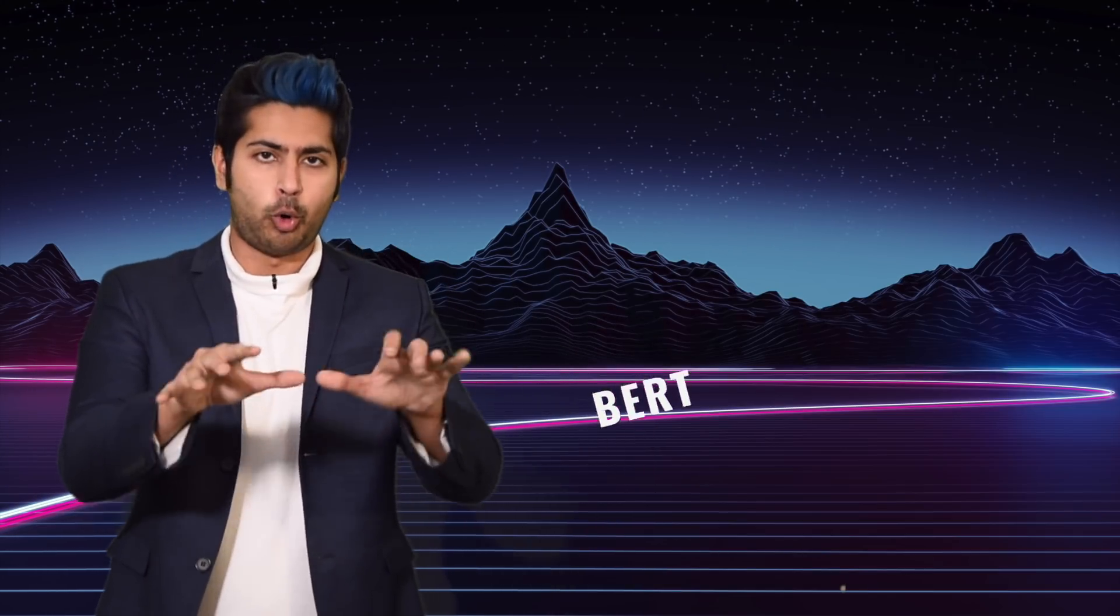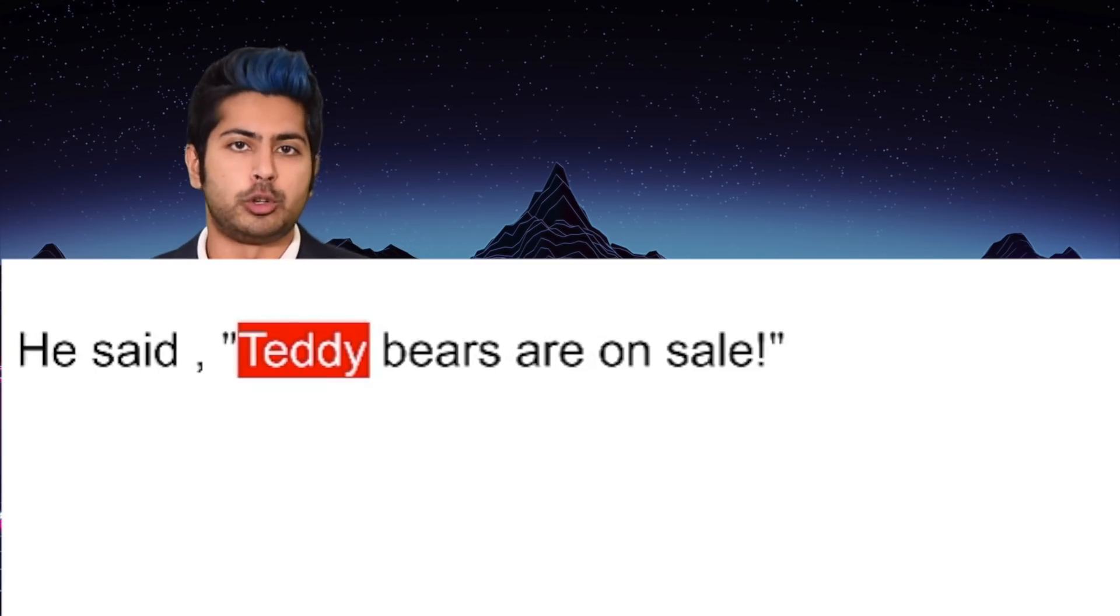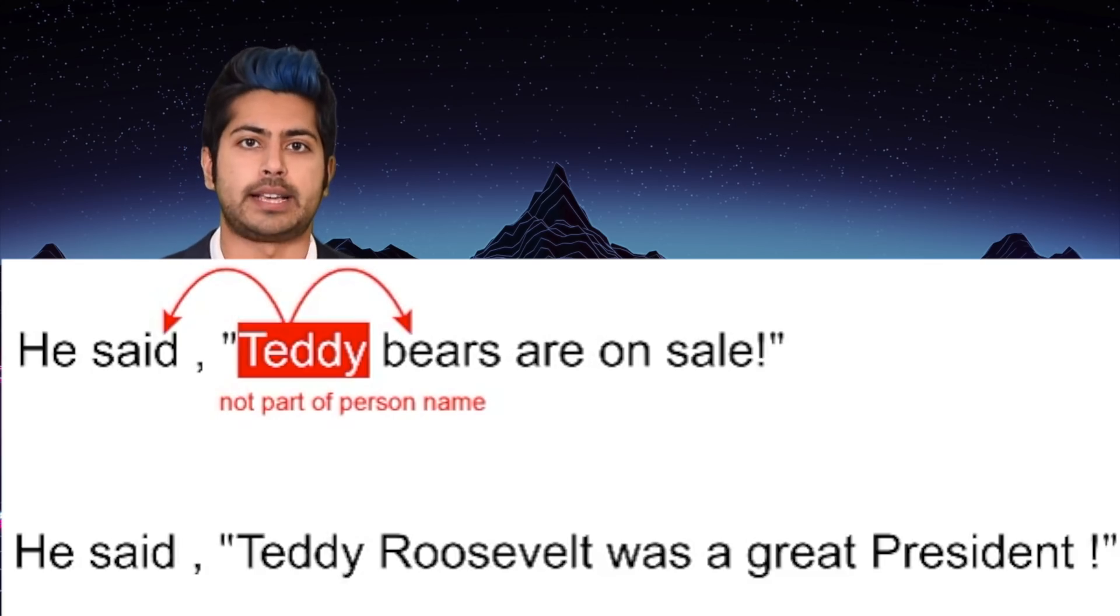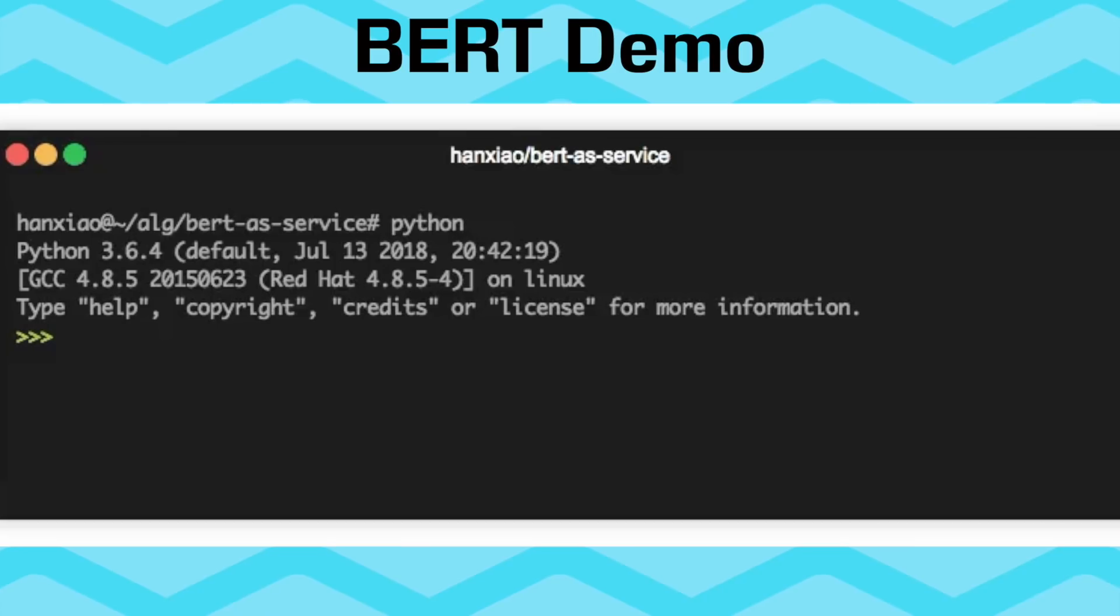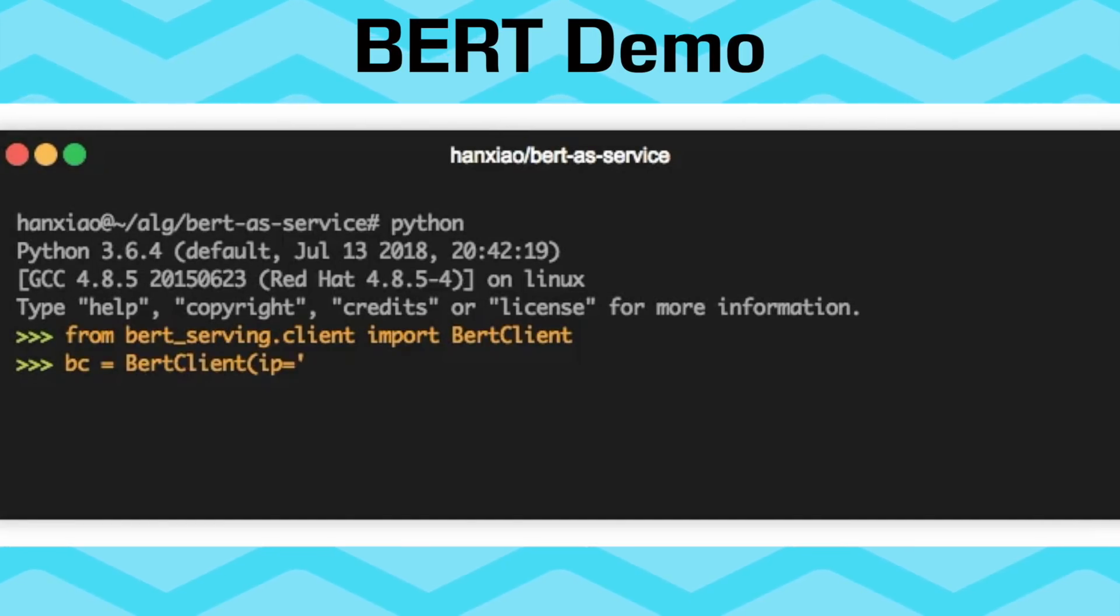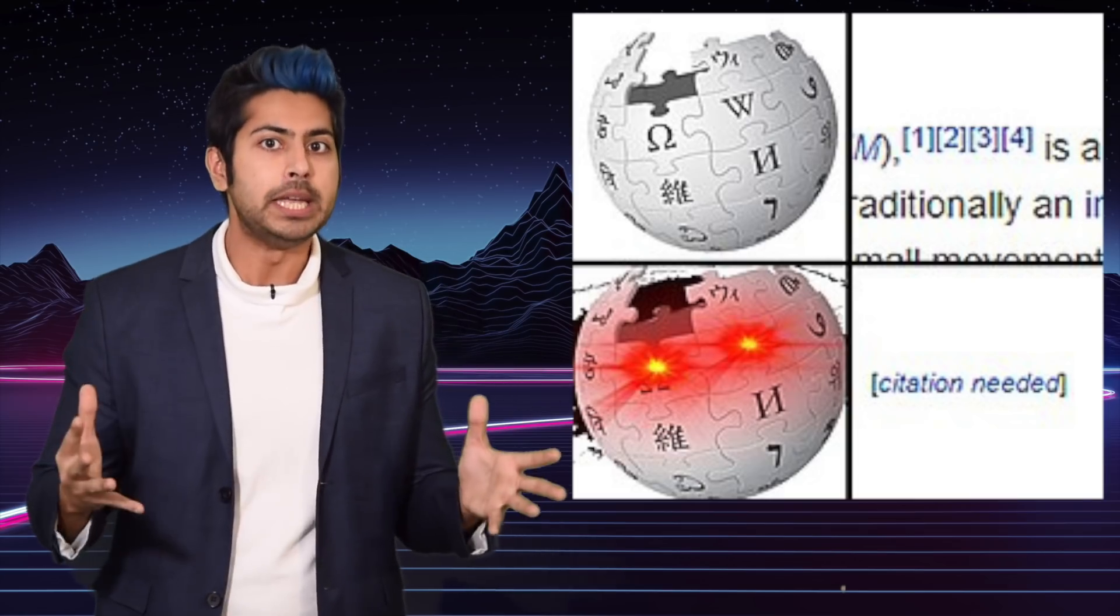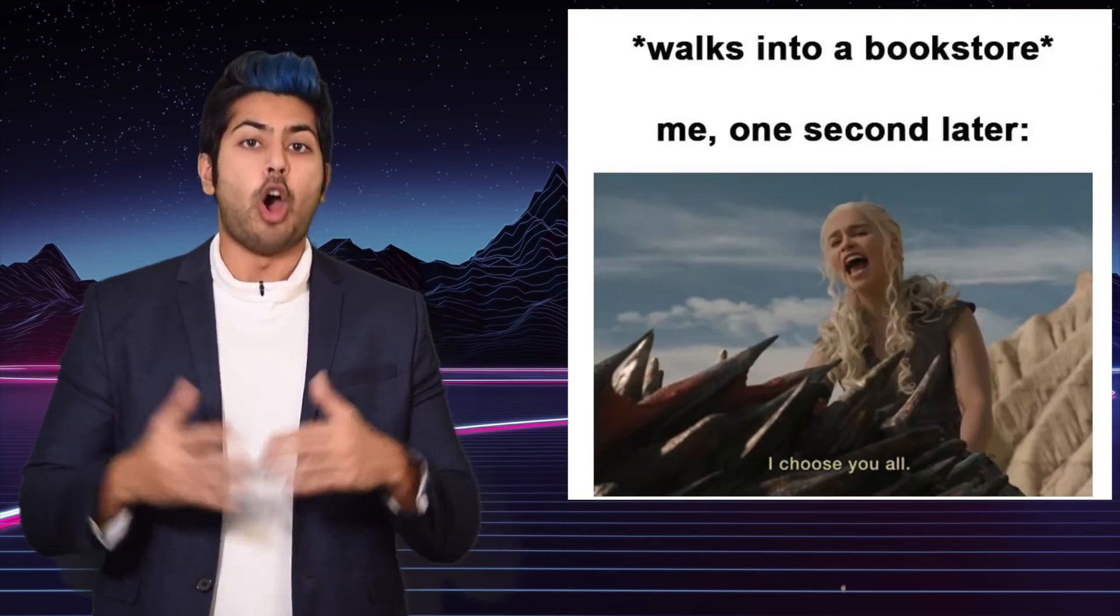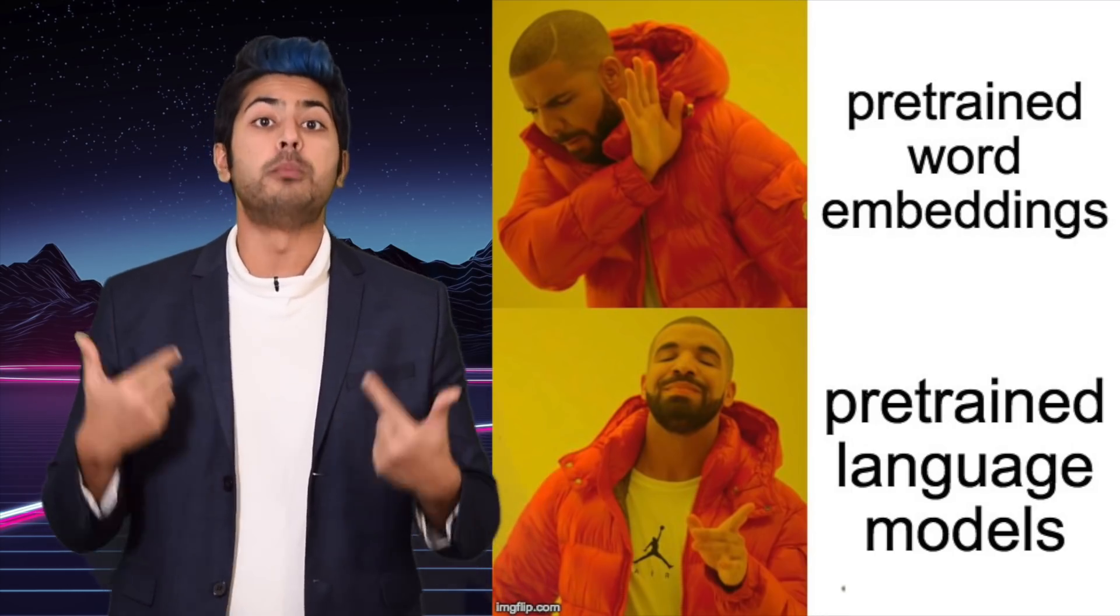That is until Google released BERT, or Bidirectional Encoder Representations from Transformers. They modified the original Transformer architecture to take the full context of a word into account when learning from it. BERT's bidirectional nature learned a word's context from both ends of a sentence, i.e. bidirectionally. They trained BERT on an absolutely massive amount of text data, including all of Wikipedia and 800 million words from books, and then open-sourced it for anyone to use as a starting point for their own project.